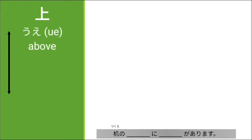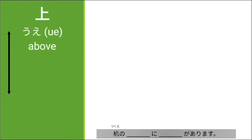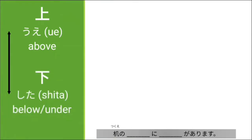Sige, we have the locations naman. Locations — we have Uwe. Medyo marami ito, may mga kasunod tayong slides. Una is Uwe. We have again the kanji, the hiragana reading and the English translation. Uwe is 'above' and Shita is 'below.'